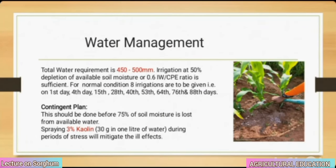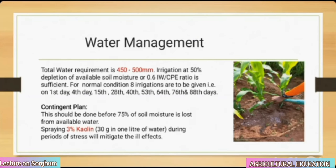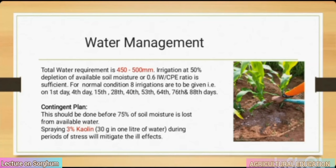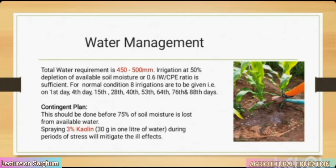Water management: total water requirement is 450–500 mm. Irrigation at 50% depletion of available soil moisture or 0.6 IW/CPE ratio is sufficient. For normal conditions, 8 irrigations are to be given — on the 1st, 4th, 15th, 28th, 40th, 53rd, 64th, 76th and 88th days.